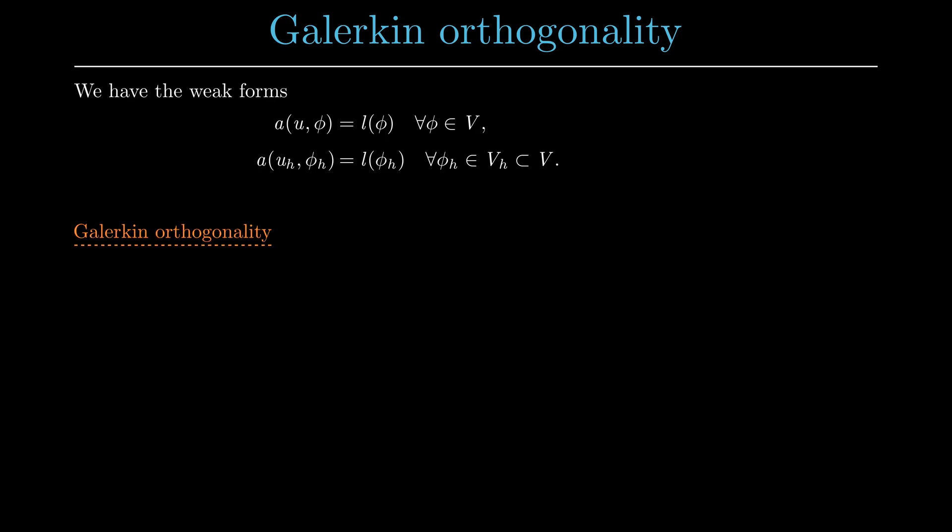We can then write down the Galerkin orthogonality, which says that the error u minus uₕ is a-orthogonal to all functions from the finite-dimensional space vₕ. This can be formulated as this equation.